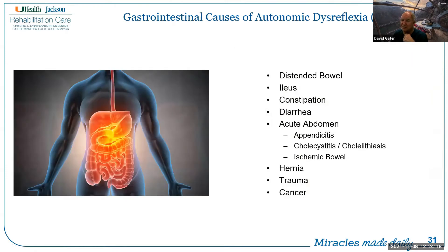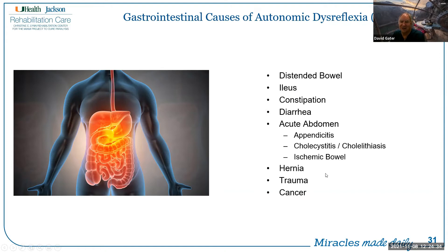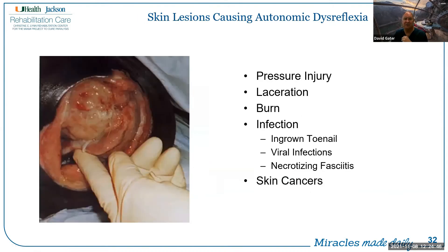The number-two cause of autonomic dysreflexia is bowel-related: a distended bowel, ileus, constipation, diarrhea, acute abdomen, hernia, trauma, and cancer can all cause autonomic dysreflexia — all as noxious stimuli below the level of injury that stimulate reflex sympathetic outflow.